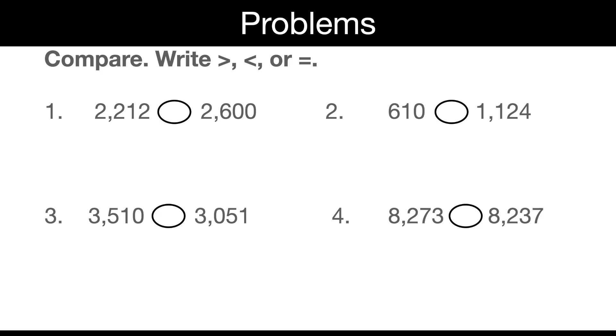This time I'm just going to go side to side instead of a place value chart. So the thousands are equal. But when I get to the hundreds, I see that the two and the six are not equal. The six is greater, which means that that whole number is greater. We'll put in our symbol. And so that one would read 2,212 is less than 2,600.